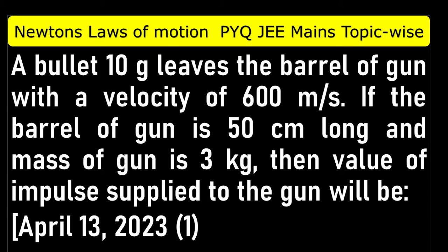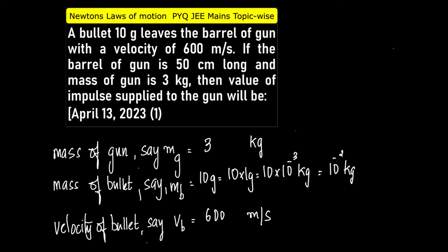Let us write down the given statements. Mass of the gun is 3 kilograms. Mass of the bullet is 10 grams, which we take as 10 × 10⁻³ kilograms, therefore 10⁻² kilograms. Velocity of the bullet is given as 600 meters per second, so Vb = 600 m/s.